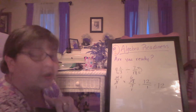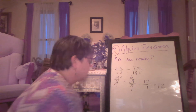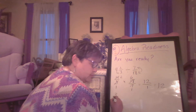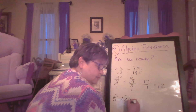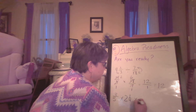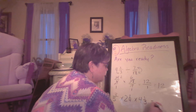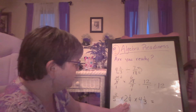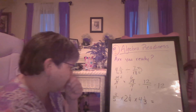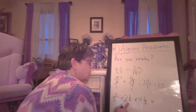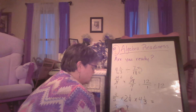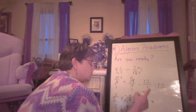Let's move on. We have this problem: three-fifths times two and one-fourth times four and one-third. The first thing I want to do is work with fractions, not mixed numbers, so I'm going to change both of those to improper fractions. Two times four is eight, plus one is nine — so here I have nine-fourths. I'm going to keep this three-fifths, and here: four times three is 12, plus one is 13 — keeping the denominator.